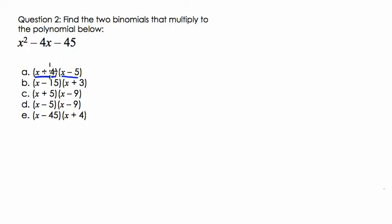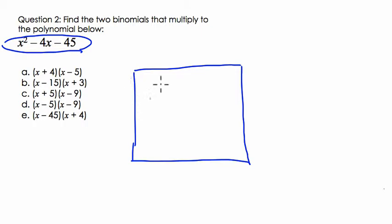So the way I would do this is I would set up an area model. And I know that the goal, the area, is actually this trinomial here. I'm saying that this area represents x squared minus 4x minus 45.